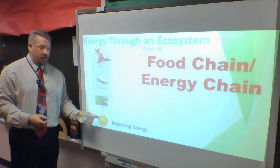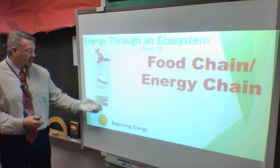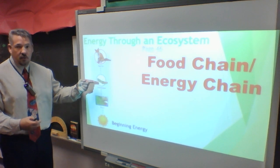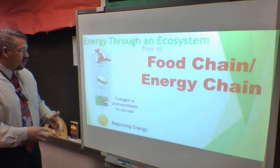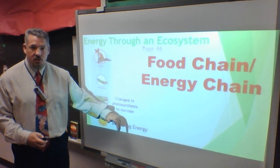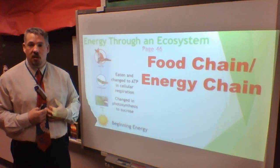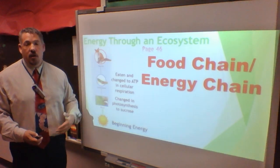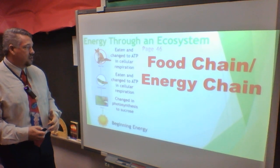The energy stored as sucrose in autotrophs is then transformed by the grasshopper or any organism eating the autotroph, becoming ATP inside their bodies through cellular respiration. When that organism is eaten, ATP is transferred and converted into ATP for the next organism's body. We constantly pass energy from one source to another: nuclear energy → photosynthesis → sucrose → ATP, continuing up through each level.